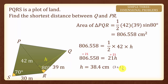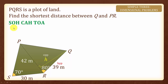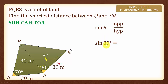Let's look at another way of solving this. Since we have a right angle here, we can use trigonometry ratios. With the given angle of 80 degrees, H will be the opposite and 39 will be the hypotenuse. We will use sine theta equals to opposite over hypotenuse — substituting the values, sine 80 degrees equals to H over 39. Multiplying both sides by 39 gives us H equals to 38.4 cm, rounded off to 3 significant figures.